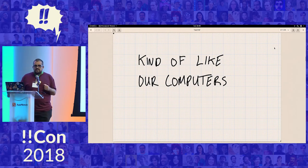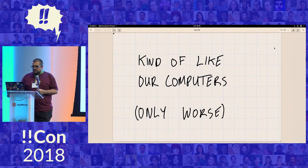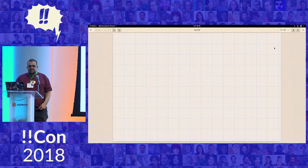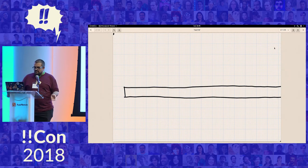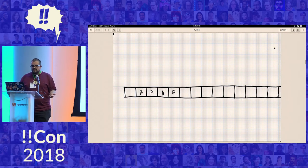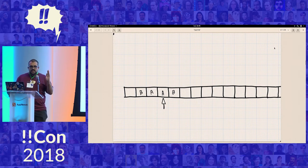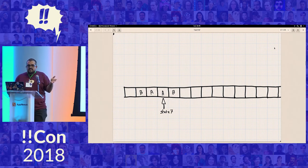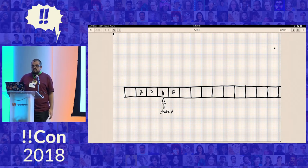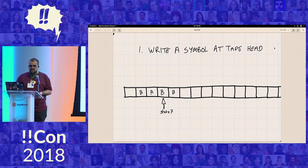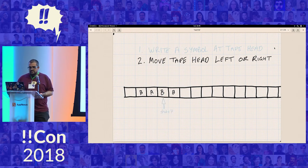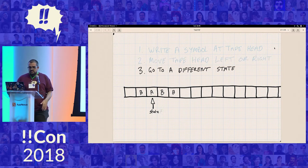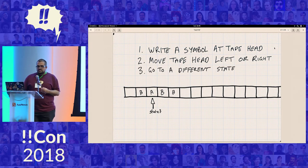The very first sentence in this paper is the computable numbers may be described briefly as the real numbers whose expressions as a decimal are calculable by finite means. And this is 1936. He had to define what calculable by finite means even means. There were no computers at this time. So he came up with a formalism called the Turing machine. And I assume he was nice because he didn't actually call it after himself. That's what we call it. He called it an A machine for an automatic machine. And I'm going to explain how this Turing machine works very, very fast. So basically a Turing machine is kind of like our computers, just worse. So here's a setup. There's a tape. The tape's divided into cells. Cells can have symbols in them. There's a cursor or a read head pointed somewhere. And there's some state, like just a number we can say. And the Turing machine can only do three things. It can write a symbol at the tape head, kind of like erase the A and put a B instead. It can move the tape head left or right. So move to the left. And it can go to a different state. So change the state to state three. And that's all it can do.